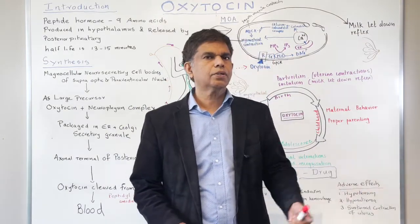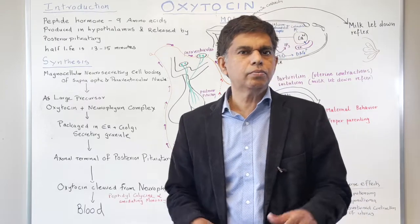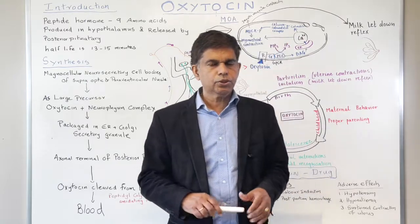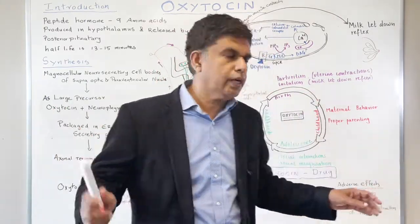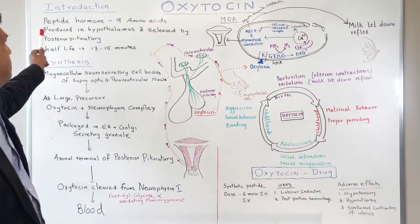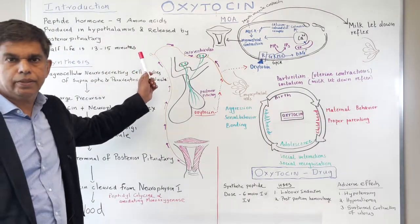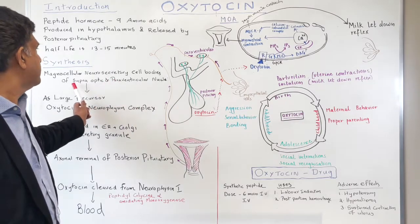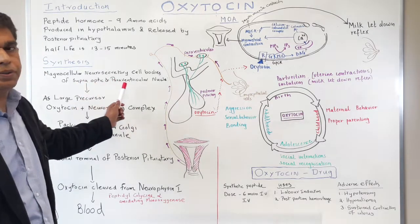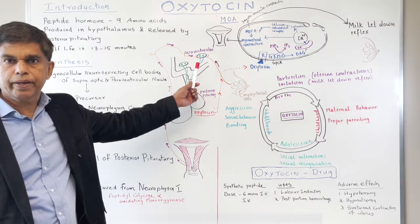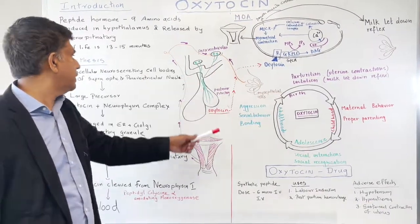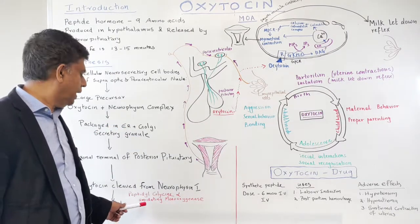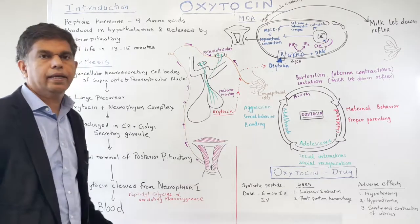Too much contraction of the uterus is also a concern. Let's review oxytocin one more time: it's a peptide hormone with nine amino acids. Magnocellular neurosecretory cell bodies are in the paraventricular and supraoptic nuclei, with the main action taken by the paraventricular nucleus. The oxytocin-neurophysin complex is cleaved by peptidylglycine alpha-amidating monooxygenase and released into the blood.